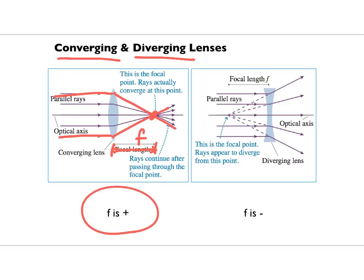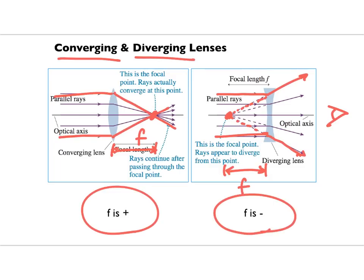We're going to use a positive number for the focal length of a converging lens. For a diverging lens, the exact opposite happens: rays of light come in and instead of being brought together, they're sent apart — they diverge. But if your eyeball is out here looking at these rays, and you take the rays of light back to see where they appear to come from, they appear to come from a single point behind the lens. We call that the focal point of a diverging lens. The rays of light don't actually converge there — in some sense it's like a virtual focal point. To capture the idea that it's on the wrong side of the lens, we use a negative number for the focal length.